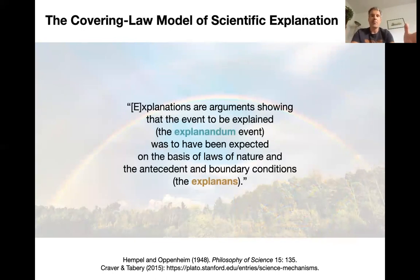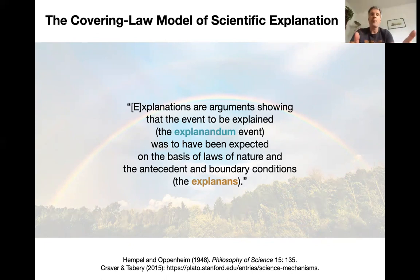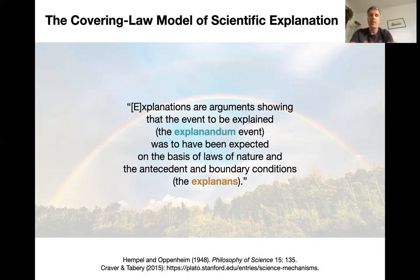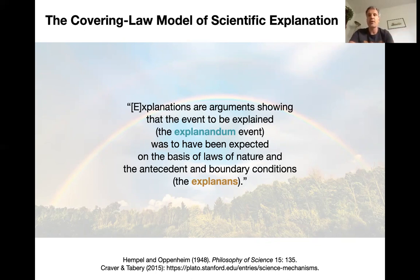This classical account makes the following statement: explanations are arguments — logical and deductive arguments — showing that the event to be explained, the explanandum, was to have been expected on the basis of laws of nature. That's what 'nomological' means: the deductive argument derived from a basic law, but also from the antecedent and boundary conditions. Those laws and specific conditions are called the explanans — the tools by which you provide the explanation. We use the explanans to explain the explanandum.